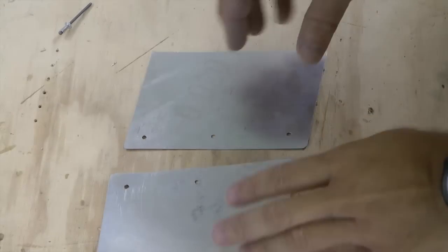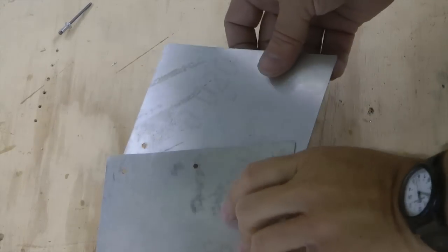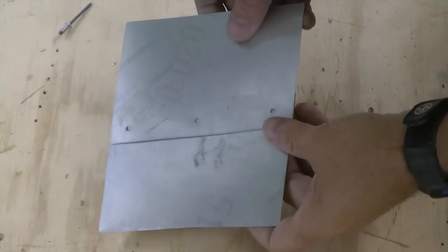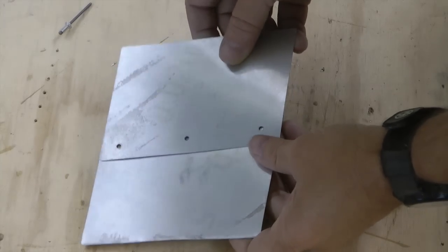For my little demonstration, I want to rivet these two pieces of aluminum together. I've got the three holes and I'm going to overlap them and rivet them together.